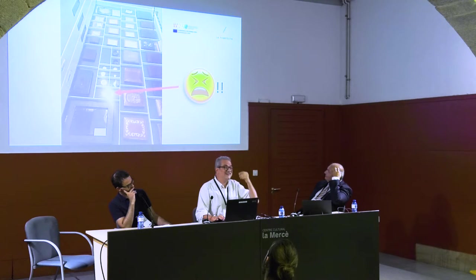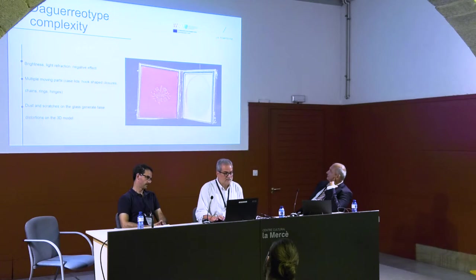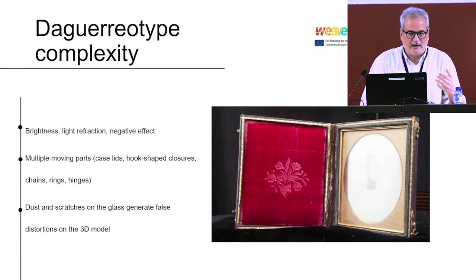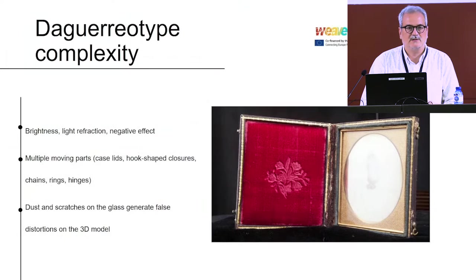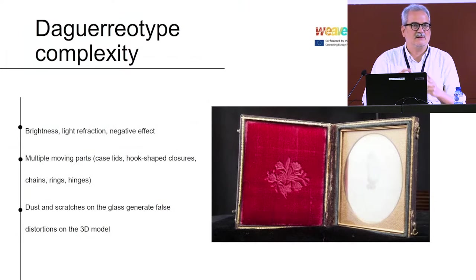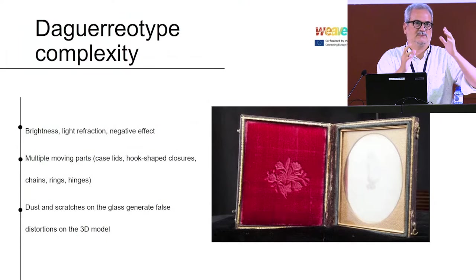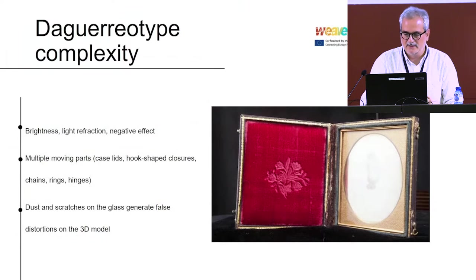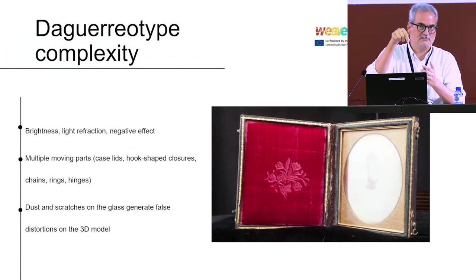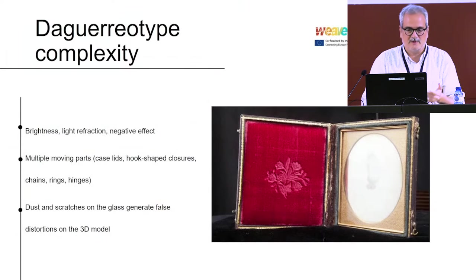The challenge of the project was not faking the result — not making an idealized 3D model of what the photogrammetry would look like. The complexity comes because it's brightness by reflection, positive and negative at the same time, with multiple moving parts: the case leads, the closures, hooks that move, and the chains. The daguerreotype needs to be photographed from both directions — face up and face down. When you move it, the hook also moves, and you have to be really precise not to move the leads, otherwise the result can be affected.